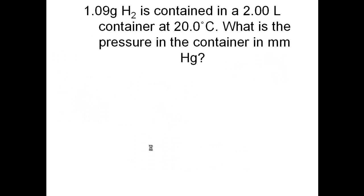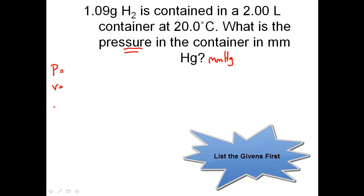In this problem, we have 1.09 grams of hydrogen contained in a 2 liter container at 20 degrees Celsius. What is the pressure in the container in millimeters of mercury? Millimeters of mercury is a unit of measurement of pressure. Let's start the problem with P, V, n, R, and T.